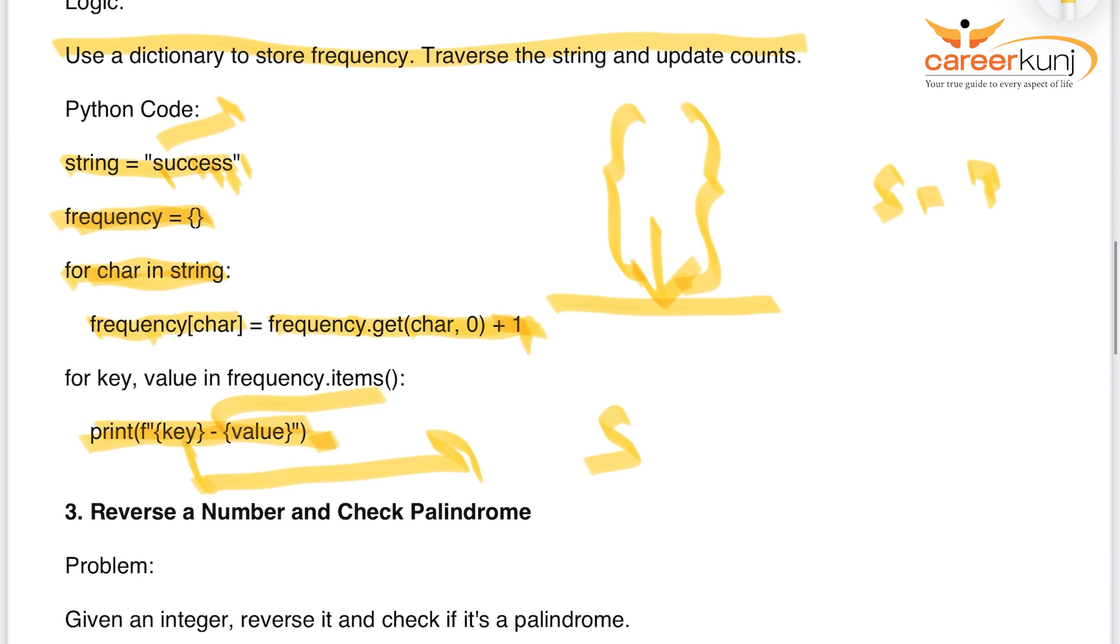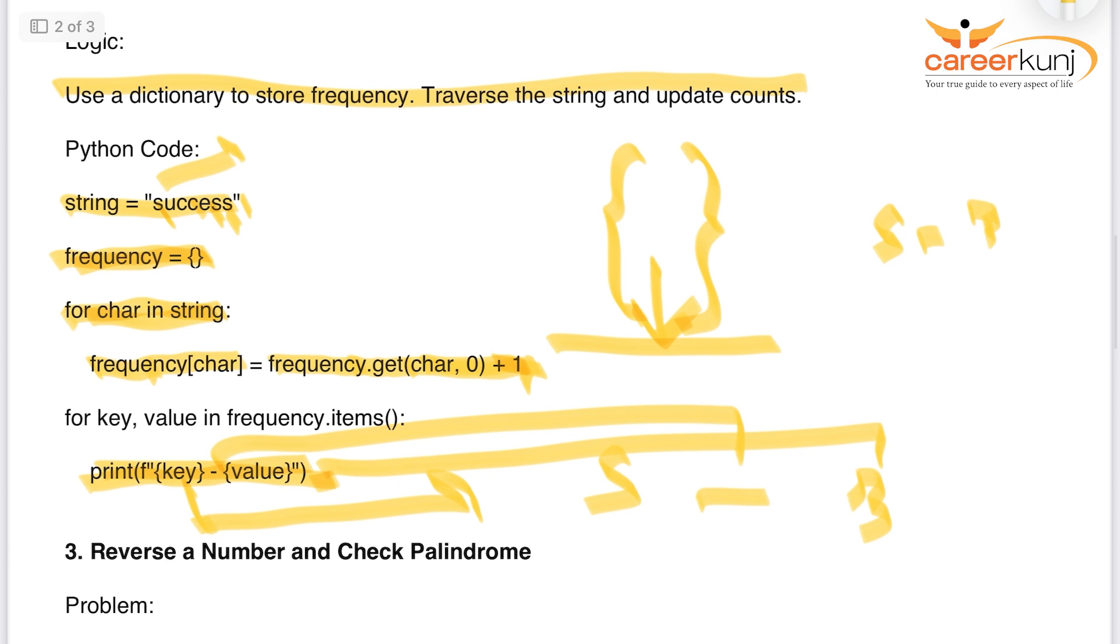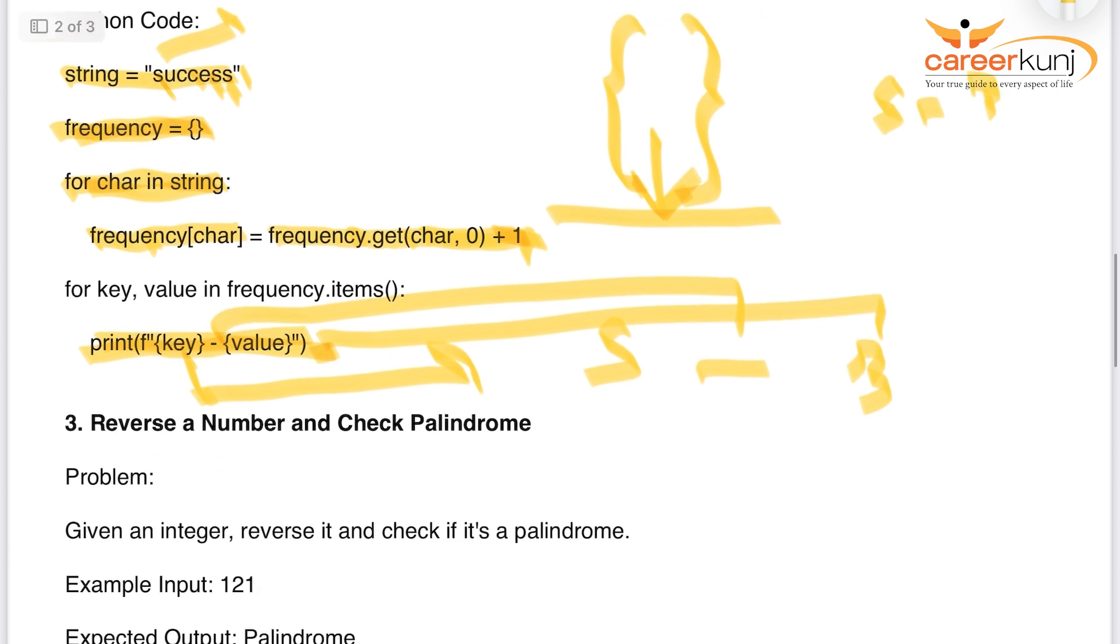That means it will print S3. This key is nothing but S here. In this case, this minus as it is. And this is the value. That is 3. Similar way, it will jump to the next character. That is U. It will only find U one time. F of key. That means dictionary second key. That will be U minus and value. That is 1. So it will give you the output like this.